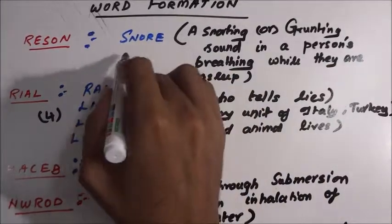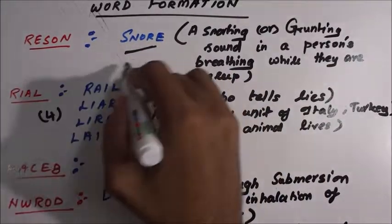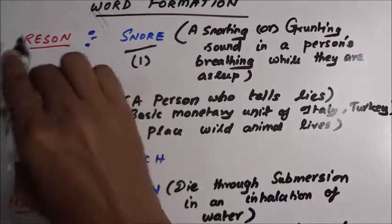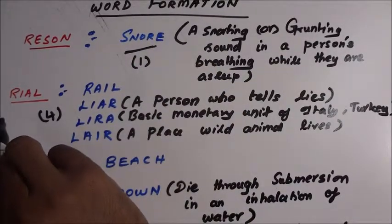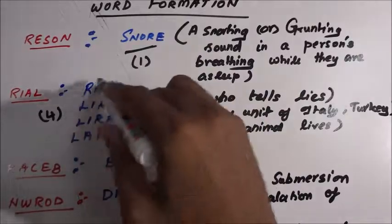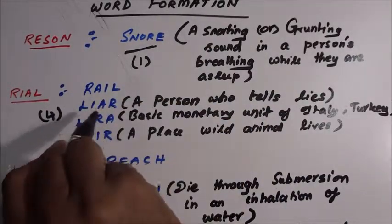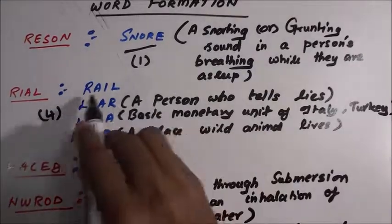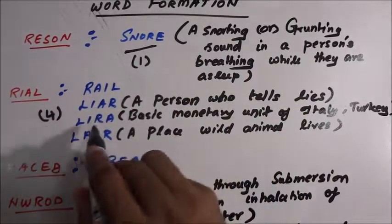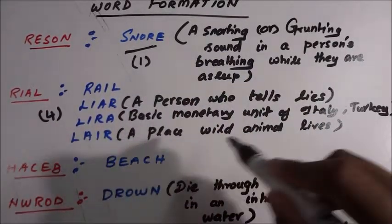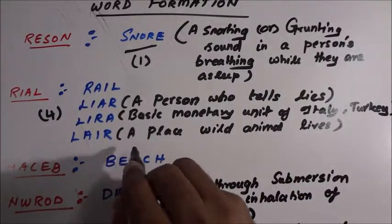Only one meaningful word can be formed from RESON. The second word is R-I-A-L, from which we can find four meaningful words: RAIL, LIAR (a person who tells lies), RAIL (used in railways), LIRE (basic monetary unit of Italy and Turkey), and LAIR (a place where a wild animal lives).